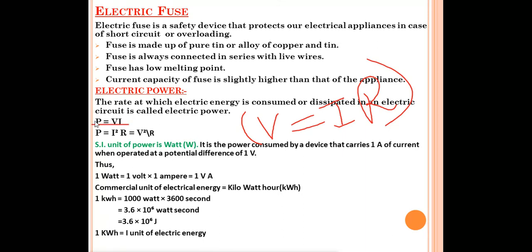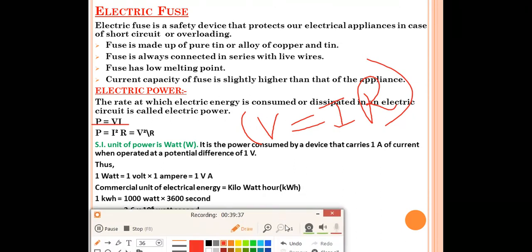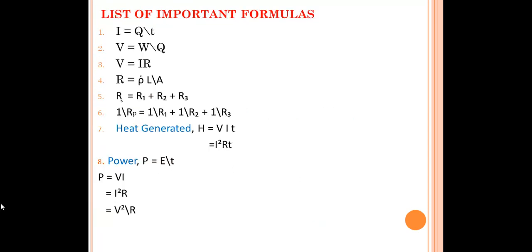The commercial unit of electrical energy is kilowatt-hour (kWh), commonly called 'unit' on electricity bills. One kilowatt-hour equals 1000 watts × 3600 seconds = 3.6 × 10⁶ joules. So 1 kWh = 3.6 × 10⁶ J. Remember this relation.